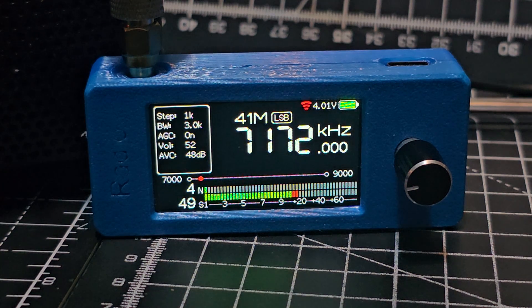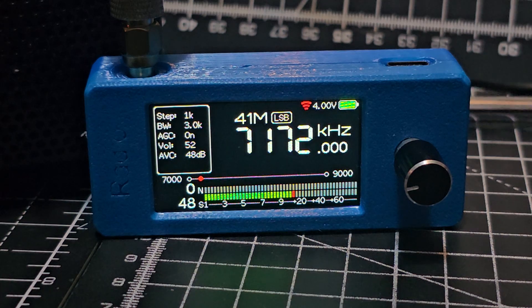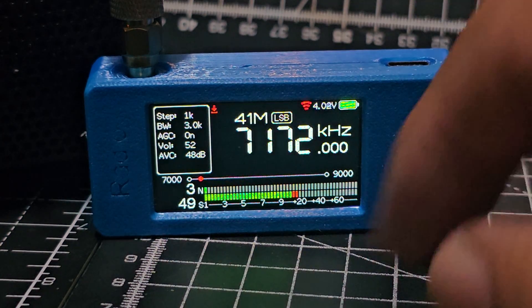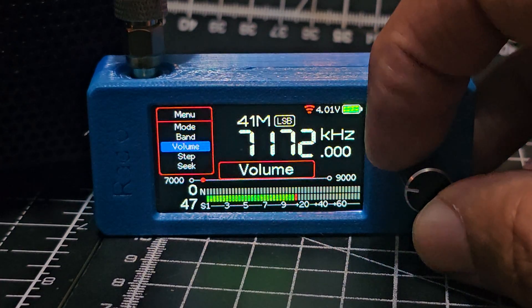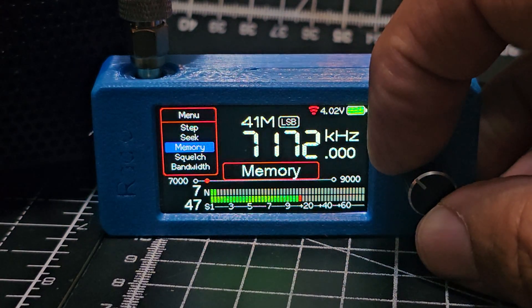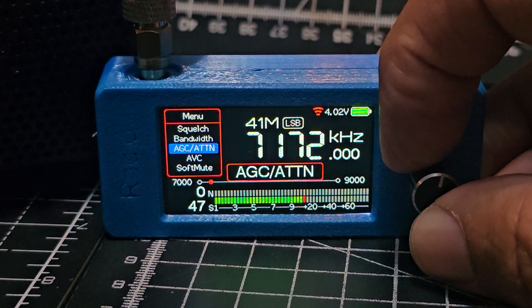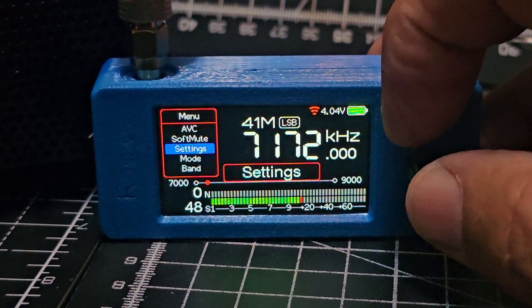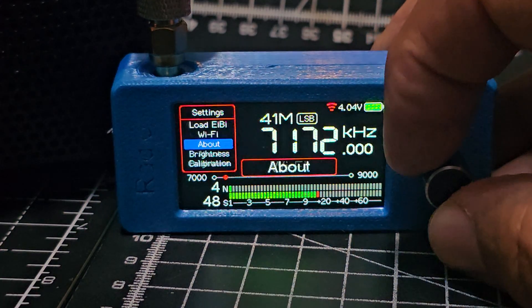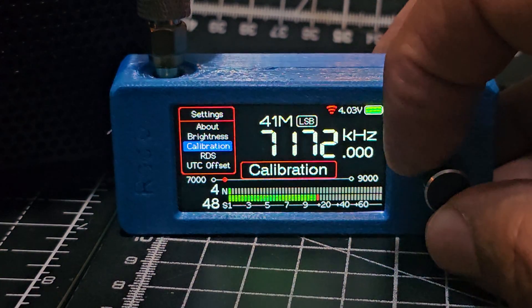I could fine tune it. So you've got full battery showing charge there. Wonder if I can remember how to change the meter. Squelch, bandwidth, soft mute. Go into settings, brightness, calibration, RDS.